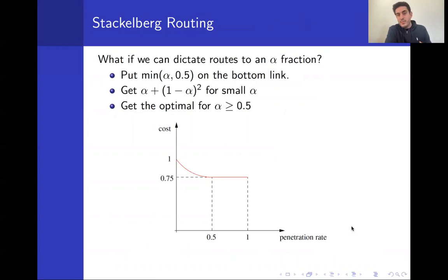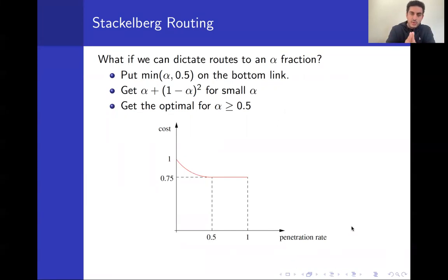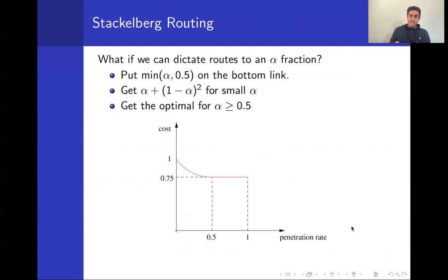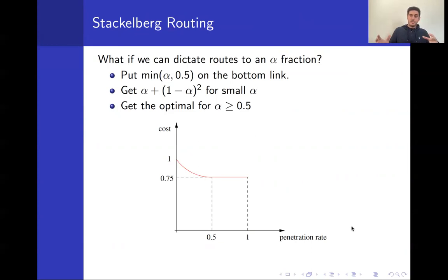What can we do in terms of intervention? Suppose we had access to an alpha fraction of the traffic and could dictate the routes that fraction would follow. In the small example, we would push traffic onto the bottom link — up to the 0.5 fraction — which is exactly when we recover the optimal solution. As the penetration rate alpha increases from 0 to 1, the aggregate delay improves from its worst value down to the optimal of 3/4. This setting is the Stackelberg routing problem.